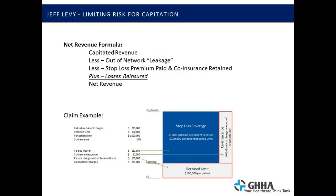First, deduct from that revenue what you're going to lose from leakage. Second, deduct the amount of premium you're going to pay for your provider stop loss reinsurance, as well as the co-pays you need to retain. Lastly, add back into that revenue formula the losses that you have reinsured — the reimbursement you're going to get from the insurance carrier — and that should equal your net revenue. It's not just the money you get from the payor: you take out the leakage, take out the premium, then add back in the reimbursement. That's your actual revenue under a capitated agreement.